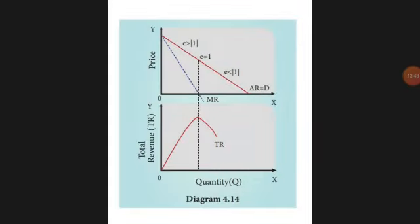In the diagram, the TR red-color line is coming down when elasticity is less than one. The MR curve is below the x-axis, showing negative values. Hence, when TR decreases, MR is negative. To summarize: when elasticity is greater than one, TR increases and MR is positive; at elasticity equal to one, MR is zero and TR is maximum; when elasticity is less than one, TR decreases and MR is negative. This concludes the revenue concept. Thank you.